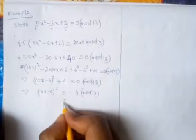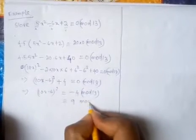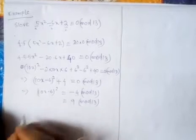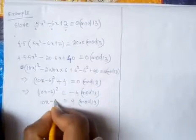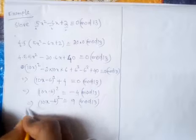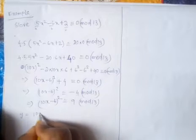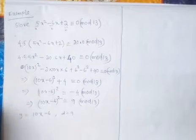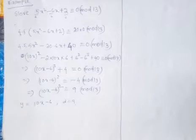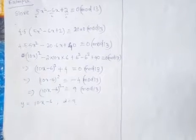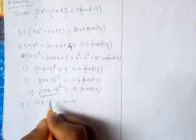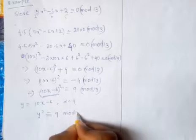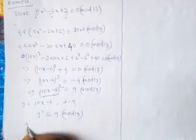Since -4 ≡ 9 mod 13 (because -4 + 13 = 9), they belong to the same equivalence class, so we can write (10x - 6)² ≡ 9 mod 13. Now let y = 10x - 6, and we need to solve y² ≡ 9 mod 13.